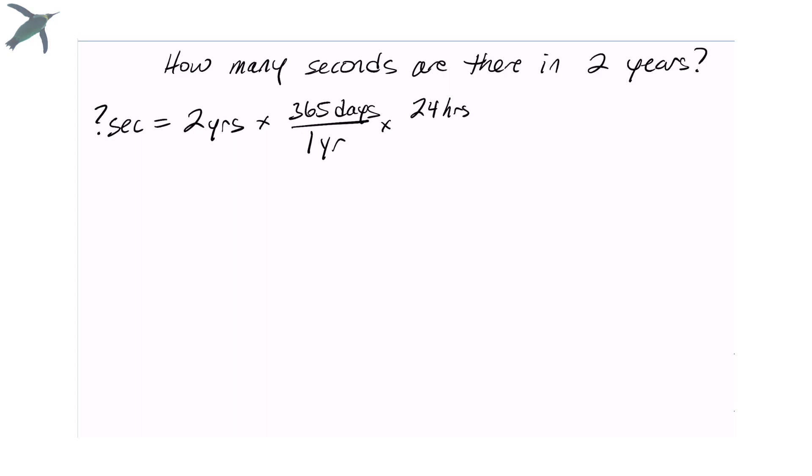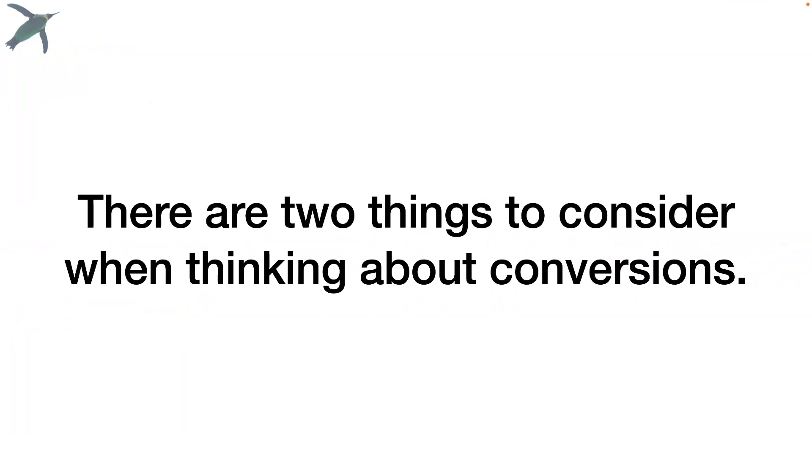365 days in a year, that's a number one. 24 hours in a day, also one. 60 minutes in an hour, that's one. And 60 seconds in one minute. So now I can cancel out days, I cancel out my hours and my minutes. I do the math and I'm left with seconds.